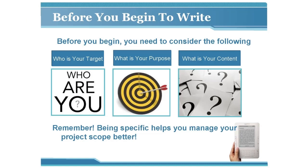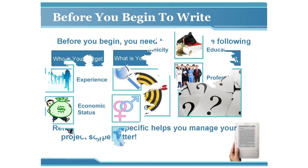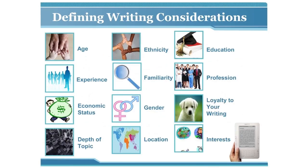Before you begin to write, you need to consider: who is your target audience, what is your purpose, and what is your content going to be? Determining who your readers and target audience are will be one of the most important aspects of writing. Before you start writing you need to know who you're going to be writing for — narrow everything down and arrive at a point where you can focus on the main content of your ebook.